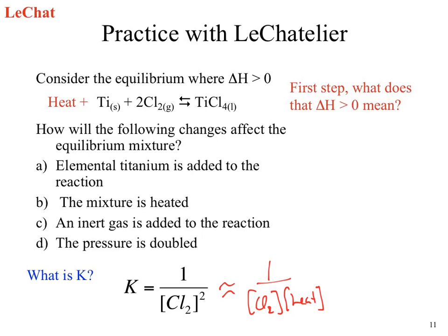Why did you say yes? Indirectly, yes. When we add an inert gas and we assume an ideal gas law, that gas comes in with what volume? One of the assumptions you make in an ideal gas law is that every gas particle takes up zero volume. So when we add an inert gas, the volume doesn't change.